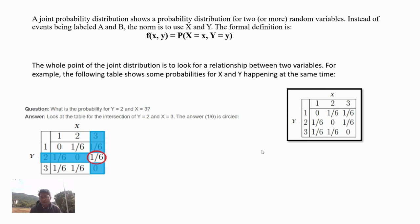Here's a question: What is the probability for Y = 2 and X = 3? You can see from the table the probability for the intersection of Y = 2 and X = 3. The answer is 1/6, as you can see from the circle. Thank you.